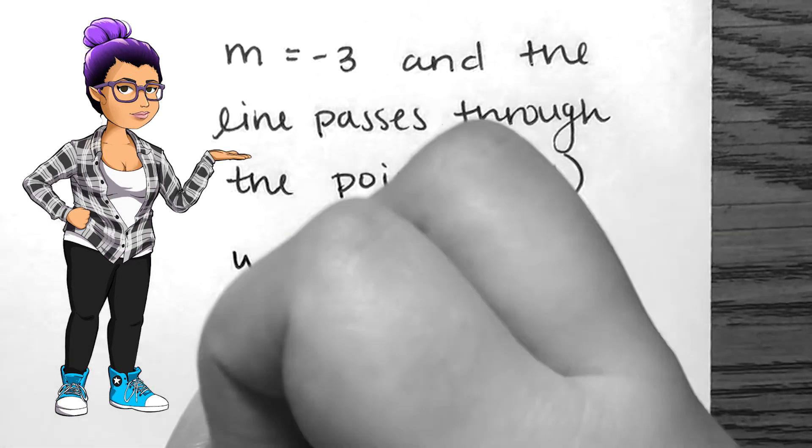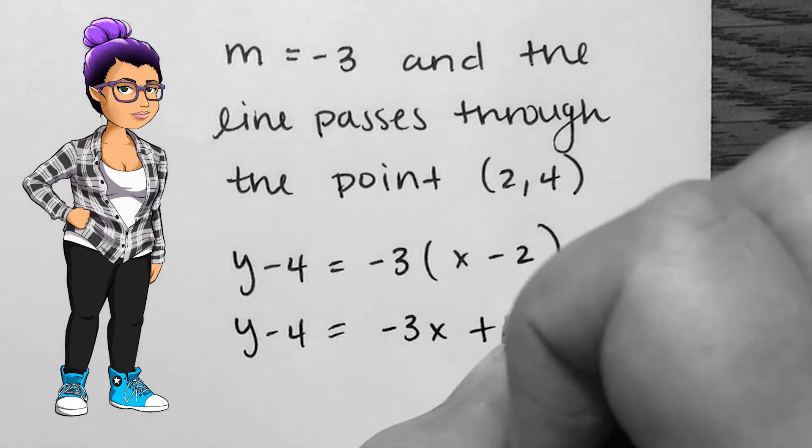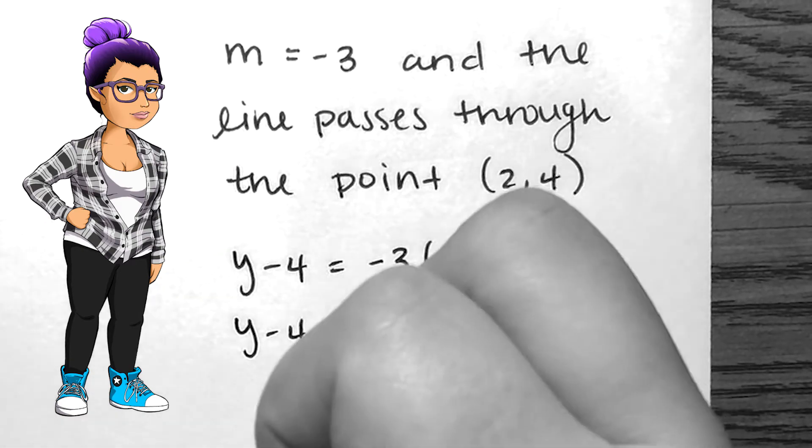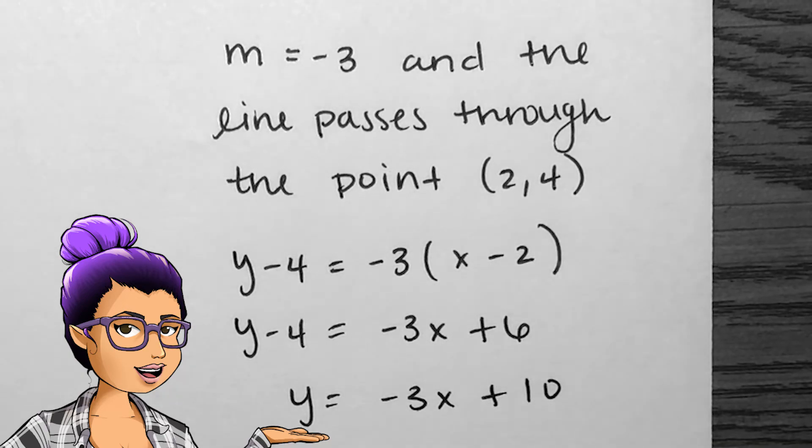Unless told otherwise, my answers should be in slope intercept form. So I should distribute the slope negative 3, then add 4 to both sides. The line described is y equals negative 3x plus 10.